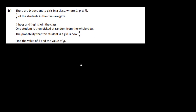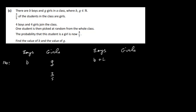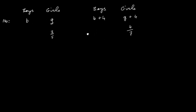Part C: There are B boys and G girls in a class. Three-fifths of the students are girls. Then four boys and four girls join the class, making the boys B plus 4 and the girls G plus 4. The probability that a randomly picked student is now a girl is four-sevenths. Find the value of B and G. Since we have two unknowns, this will turn into a simultaneous equations problem.